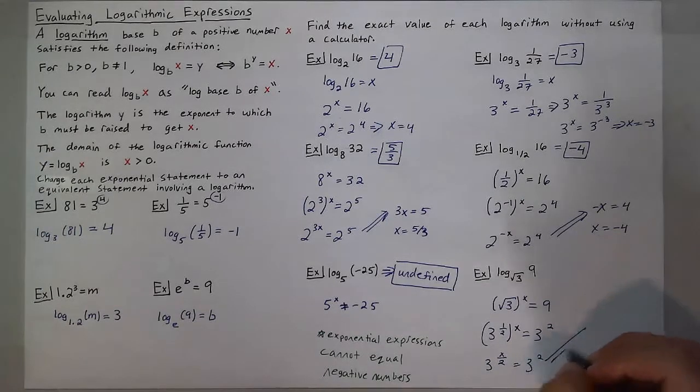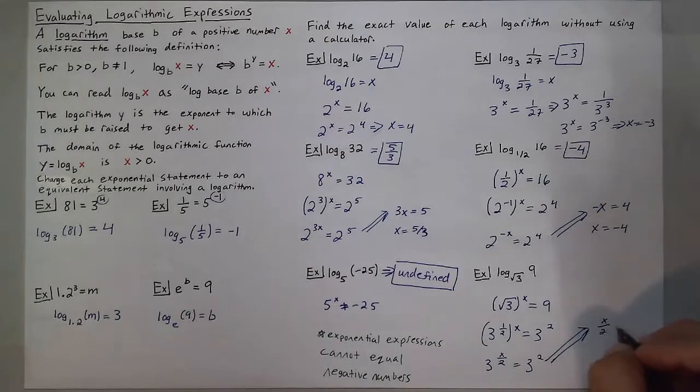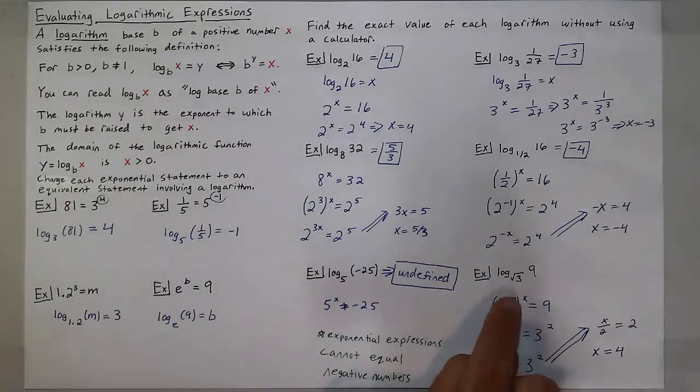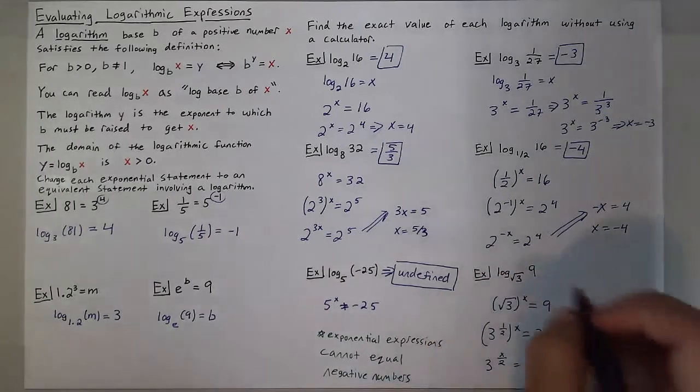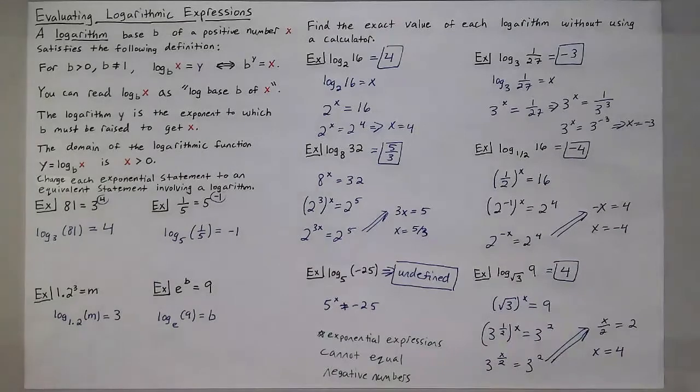Which leaves me with the statement, x over 2 is equal to 2. To finish off that statement, I multiply each side by 2 to get x equals 4. So the square root of 3 to the 4th power would give me 9. So log base the square root of 3 of 9 is equal to 4. And that is how you evaluate logarithmic expressions.